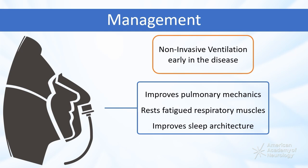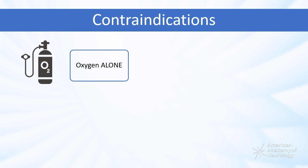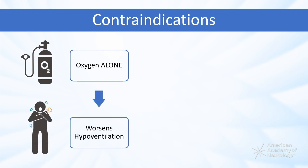This intervention has been shown to improve quality of life and prolong survival in patients with ALS. It is important to recognize several contraindications in treatment of neuromuscular respiratory failure. Treatment with oxygen alone is ineffective because ventilation is a primary problem. Supplemental oxygen by itself may actually worsen hypoventilation by decreasing hypoxic ventilatory drive.